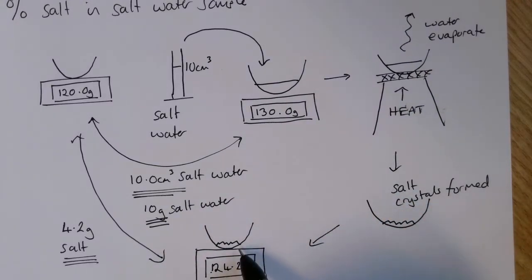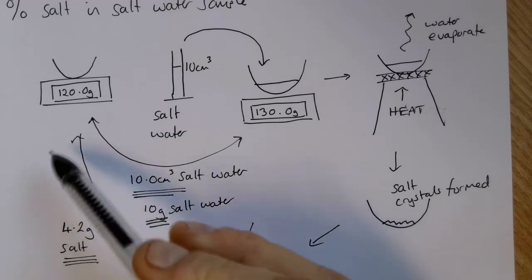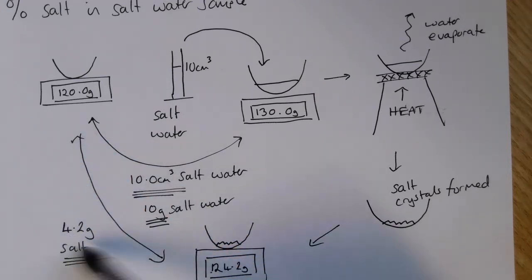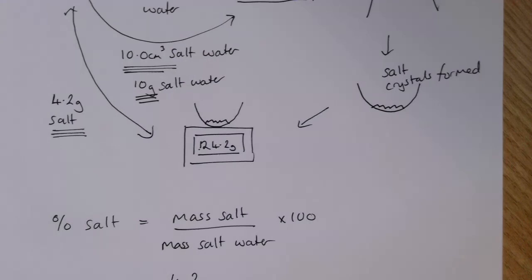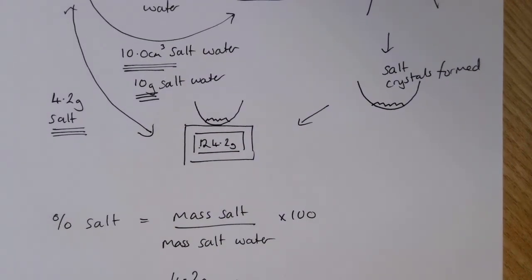We re-weigh the crucible now that just has the salt in it. The difference between that mass and the empty mass of the crucible gives us the mass of the salt, and then the equation that we need to carry out to work out the percentage is here. Thank you very much.